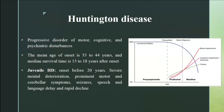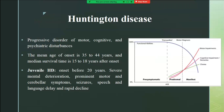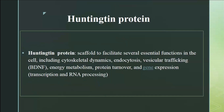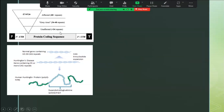Moving to polyQ disorders — Huntington's disease is an age-penetrant, progressive disorder with motor, cognitive, and psychiatric disturbances. The mean age of onset is between 35 to 45 years, and once disease onset occurs, survival is about one to two decades. There is also juvenile HD where symptoms occur before 20 years of age. Juvenile HD individuals will not have chorea; instead they have intellectual disability, cerebellar symptoms, and seizures — not the classic chorea seen in Huntington's disease.